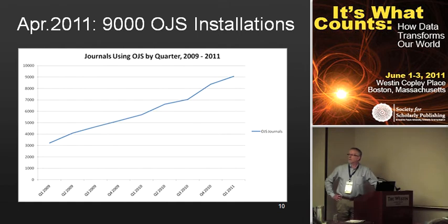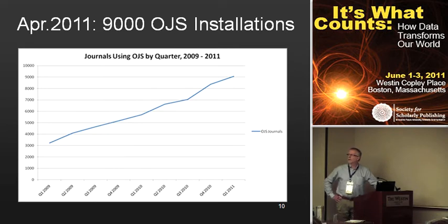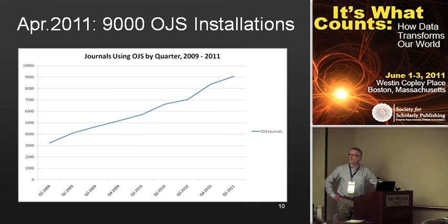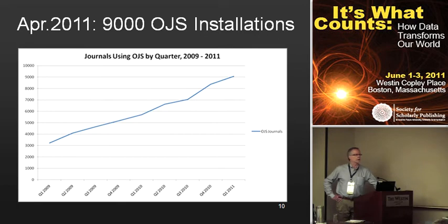This is a chart that sometimes elates us but also scares us because it still hasn't started to flatline. As of April 2011, we're able to track or count 9,000 OJS installations around the world — and that's probably a conservative figure because, being open source software, we don't actually know how many people are using it. We go out and do various checks; provided there's at least some content available in that instance, we declare it a viable OJS installation. One installation could mean one journal or many journals, since you can run many journals in one instance of OJS. About two weeks ago that figure went over 9,500 and we're estimating it'll hit 10,000 by end of summer.